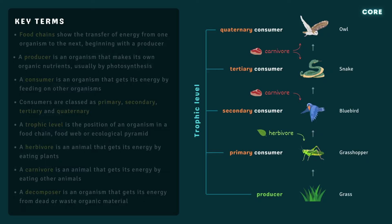In a food chain, the arrows between organisms always point in the direction of energy transfer, from food to consumer. Food chains like these are generally too simplistic, as most organisms have more than one predator and/or more than one prey.